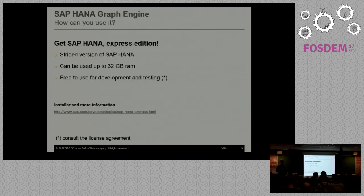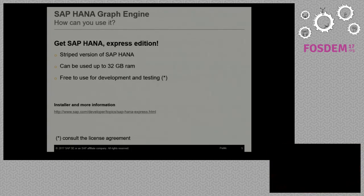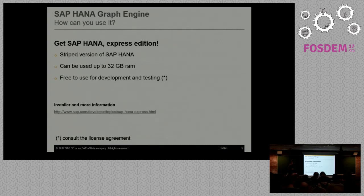How can you use it? Usually SAP HANA runs in large server landscapes, but with the recently announced HANA Express Edition you can download it and develop on it. It's a stripped version of SAP HANA limited to 32 GB RAM, so it can basically be used as a back-end for your project.